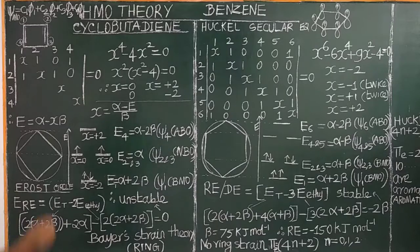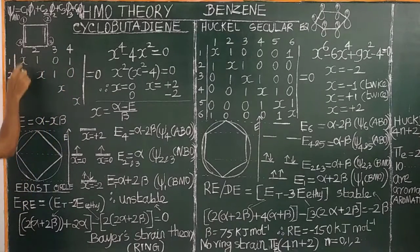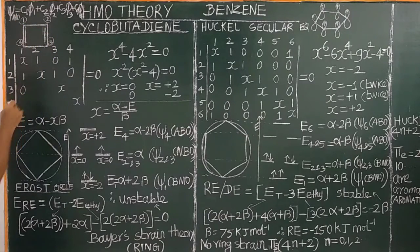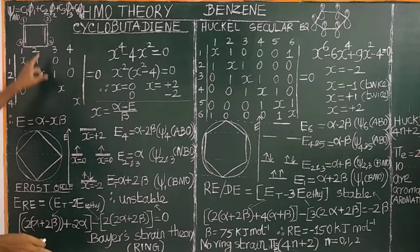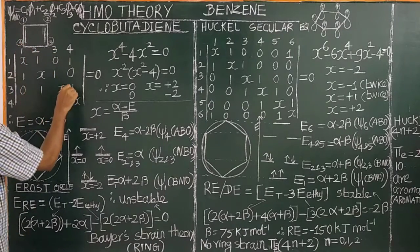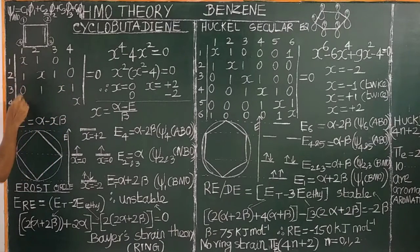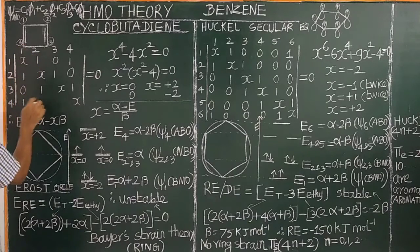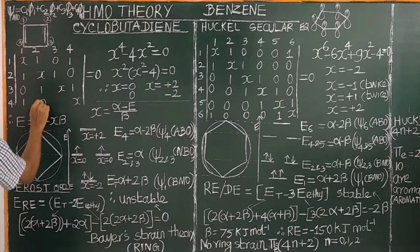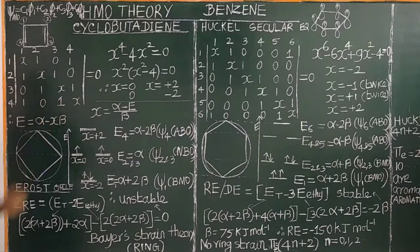Carbon 3 and 1 are not neighbors, so the element is 0. Carbon 3 and 2 are neighbors, so the element is 1. Carbon 4 and 1 are neighbors in the cyclic system, so the element is 1. Carbon 4 and 3 are neighboring, therefore 1. This completes the secular determinant.